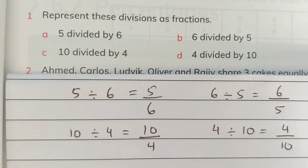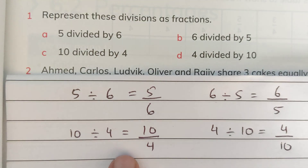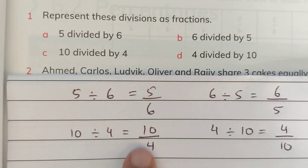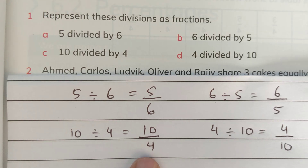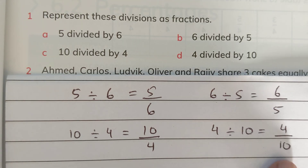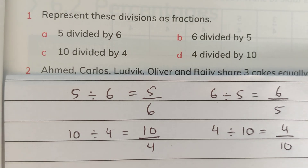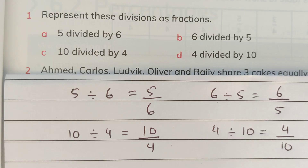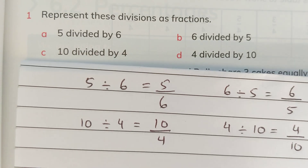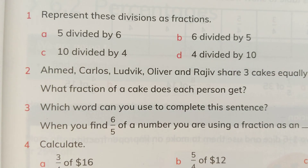So you can understand that 10 upon 4 gives us more than two wholes, and 4 upon 10 is again a proper fraction expressing less than a whole.